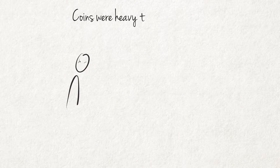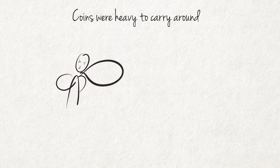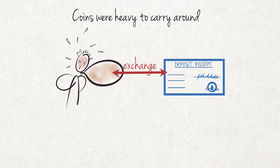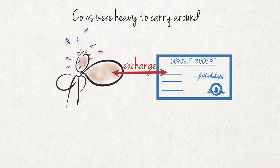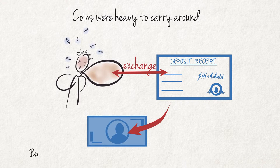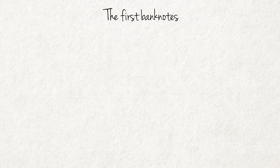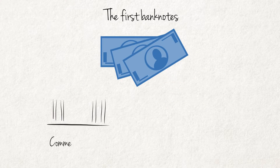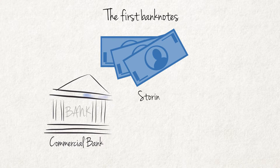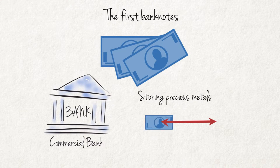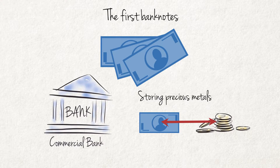As these coins were heavy to carry around, people deposited them with precious metal dealers in exchange for deposit receipts. After some time, these receipts issued to bearer were used in trading rather than retrieving gold or silver every time a transaction was done. From these tradable receipts, banknotes were developed. The first banknotes were issued by commercial banks, which took over the function of storing precious metals. These banknotes were convertible on demand into gold of the same value at the issuing bank.